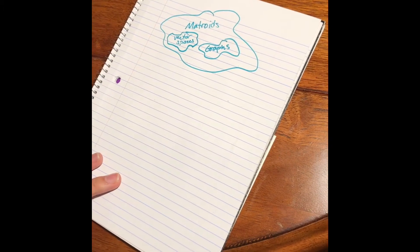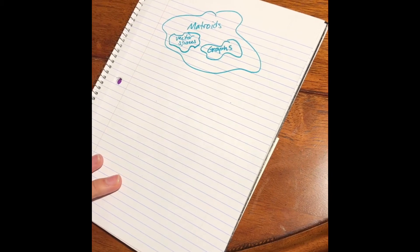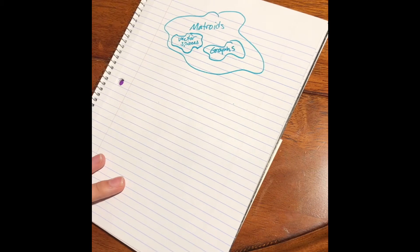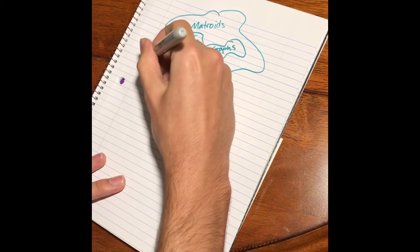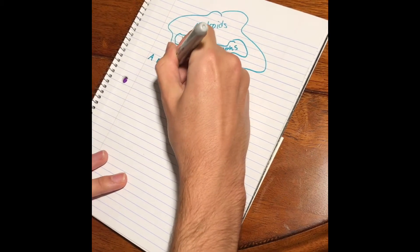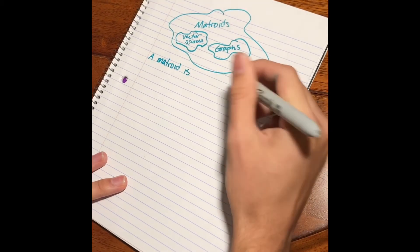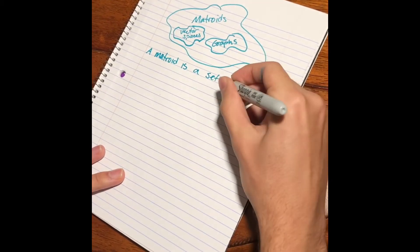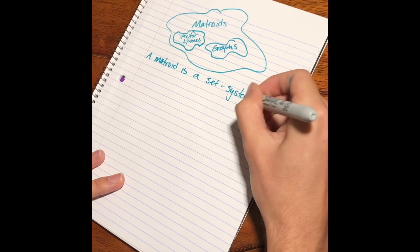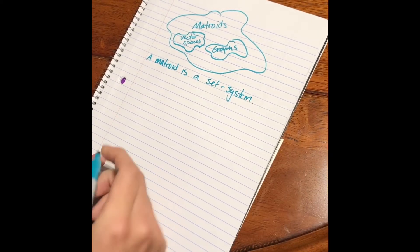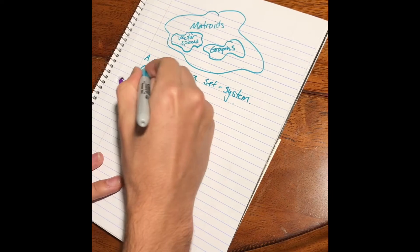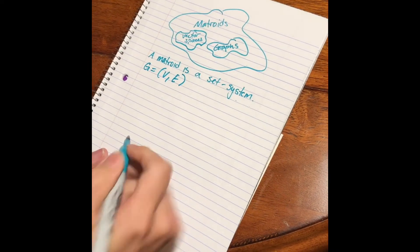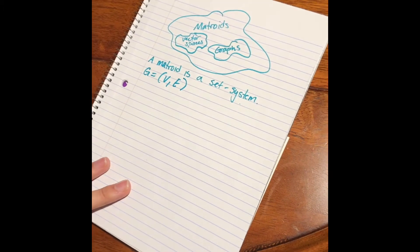The concept of a Matroid was introduced, actually, in 1935 by a man named Hassler Whitney. And just like a graph, a Matroid is defined in terms of a set system, right? For a graph, we have a set of vertices and a set of edges. That's how we define the graph mathematically.